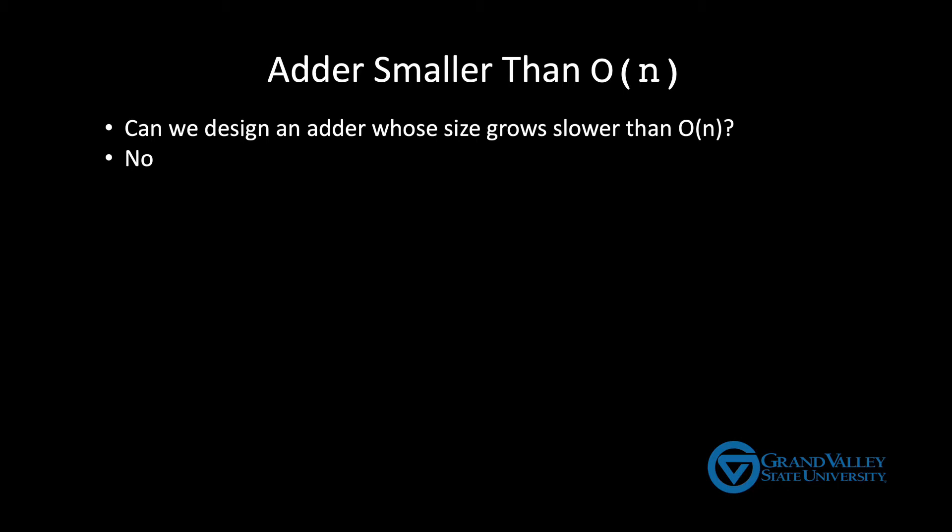Another way of looking at this is that each bit of input needs at least one unique two-input gate. If there is an input that doesn't have at minimum its own unique two-input gate, then it's not really contributing to the output. And we know from the way adders work that all the bits do affect the output. So O(n) is the best we can do.